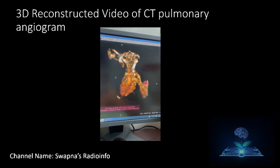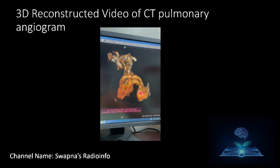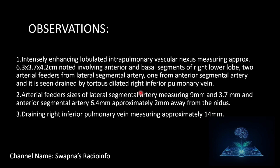Observations: an intensely enhancing lobulated intrapulmonary vascular nidus measuring approximately 6.3 × 3.7 × 4.2 cm was noted involving the anterior and basal segments of the right lower lobe. Two arterial feeders from the lateral segmental artery and one from the anterior segmental artery were noted, drained by the tortuous dilated right inferior pulmonary vein. Arterial feeder sizes: lateral segmental artery measuring 9 mm and 3.7 mm; anterior segmental artery measuring 6.4 mm. The draining right inferior pulmonary vein measured approximately 14 mm, located approximately 2 mm from the nidus.